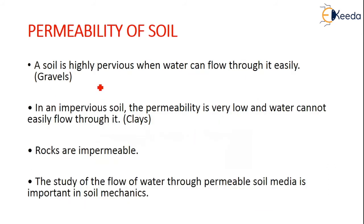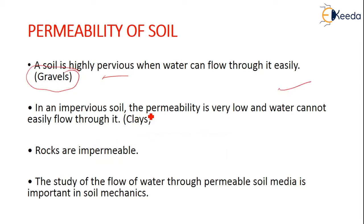A soil is highly pervious when water can flow through it very easily — for example, gravel. In an impervious soil, the permeability is very low and water cannot easily flow through it, like clay. Clay is an example, and we know that rocks are impermeable.